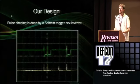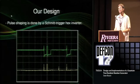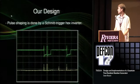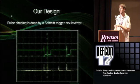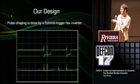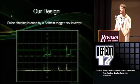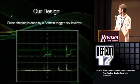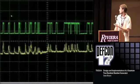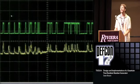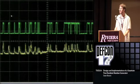When you have this at a usable voltage, you do a little bit of pulse shaping to make it easier to sample. For this, a Schmidt trigger hex inverter is used — so when there's a spike, which would be hard for the microcontroller to catch, it translates into a larger logic pulse.